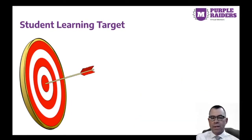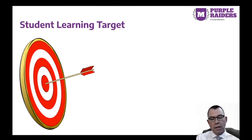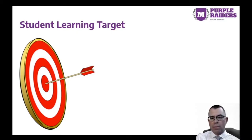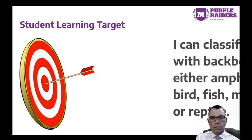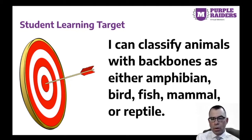There are many ways to sort animals. Scientists classify animals because there are so many of them. Today, you will learn about different groups of animals with backbones and complete a sorting activity. Read the student learning target aloud with me. I can classify animals with backbones as either amphibian, bird, fish, mammal, or reptile.